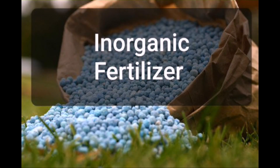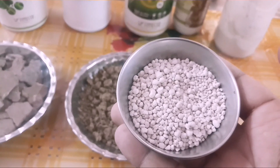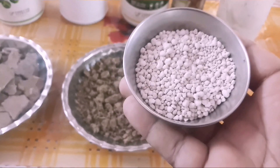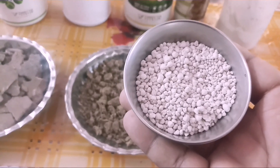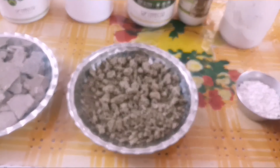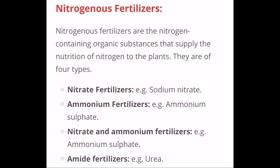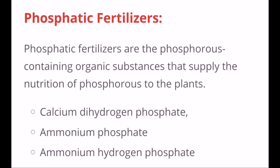Next we will discuss inorganic fertilizers. This is a sample of 15-15-15, an inorganic fertilizer. When applied to the soil, inorganic fertilizers work very immediately — the plant absorbs nutrients quickly and gets a boost. There are different types: nitrogenous fertilizers such as urea, ammonium sulfate, and sodium nitrate, which improve vegetative growth.